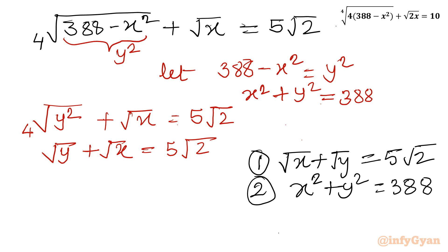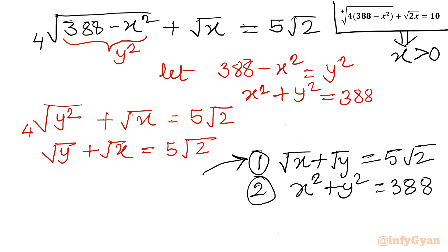From the given equation we can conclude that x must be greater than 0. From the substitution we also conclude x > 0, and therefore y > 0 as well, for real solutions only. Let's solve this system by squaring equation number 1.